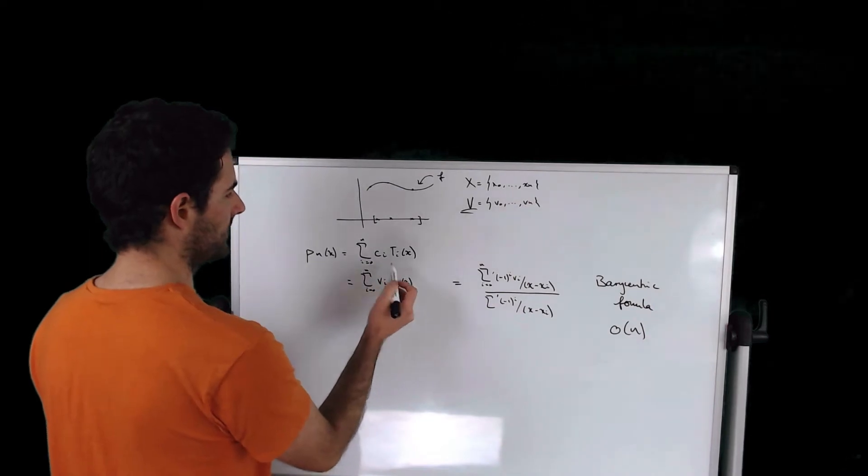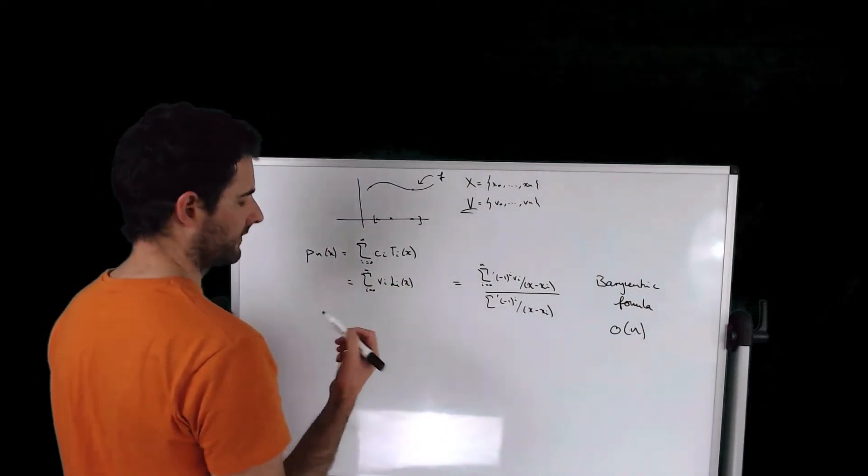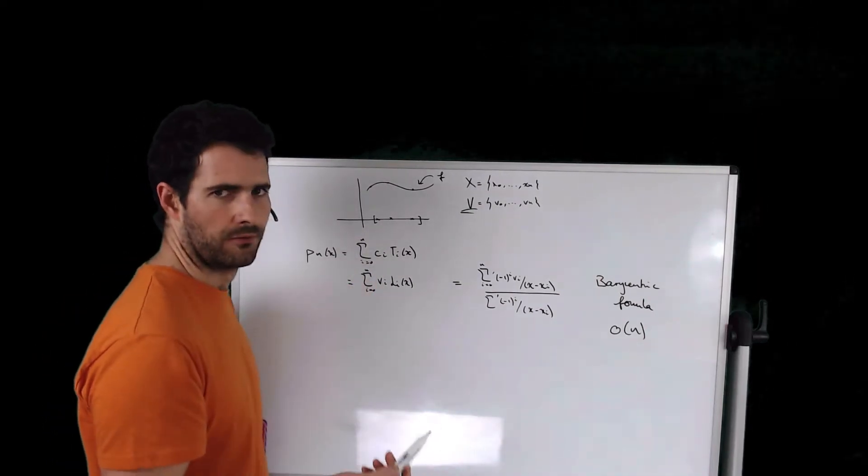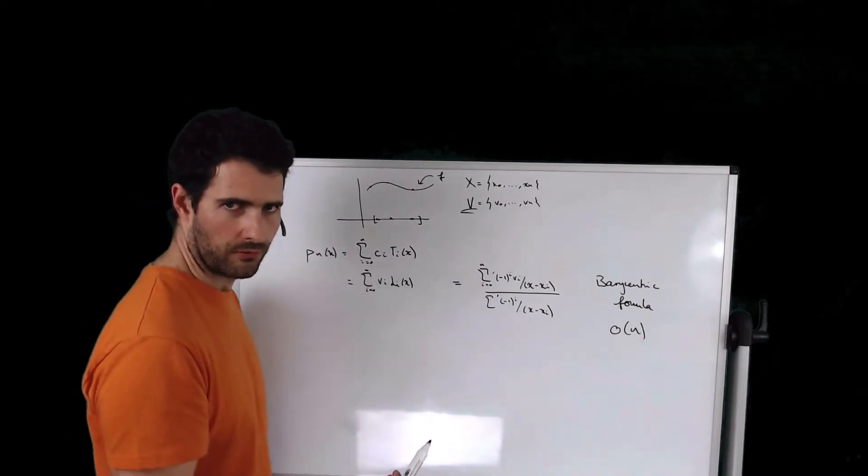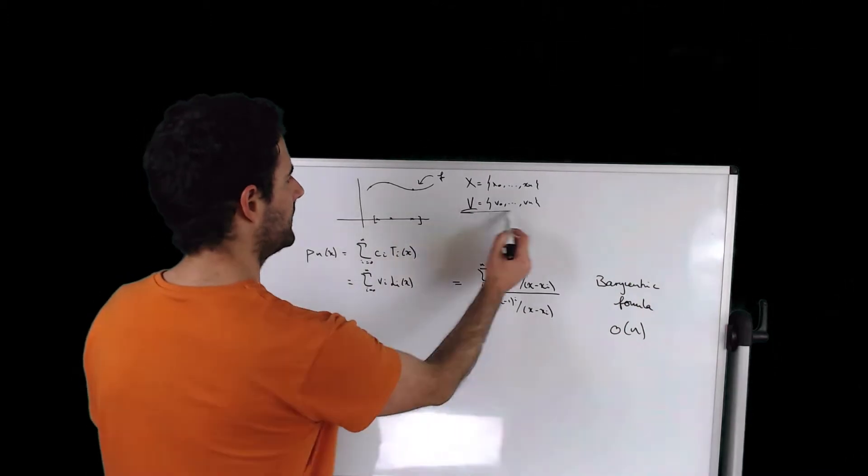The first one is in terms of the Chebyshev polynomials. That expression has coefficients ci's. The other way that it can be expressed, that we've been talking about in previous videos, is in terms of Lagrange polynomials, and this has coefficients vi's which are these values over here.